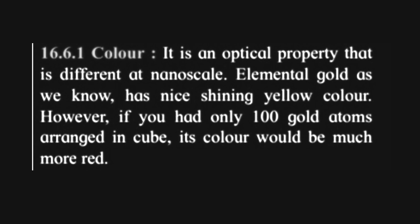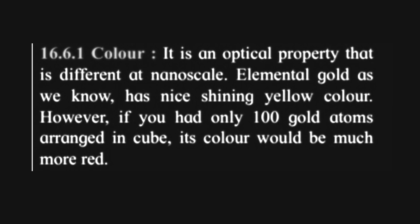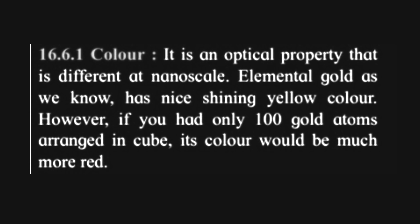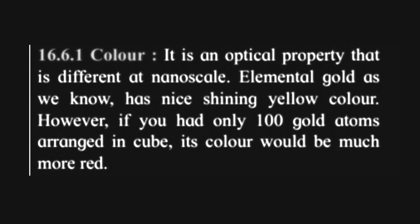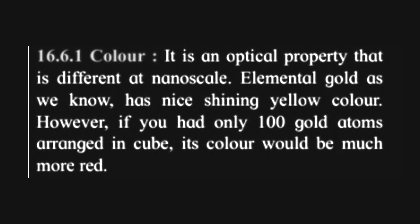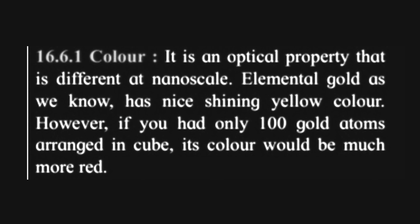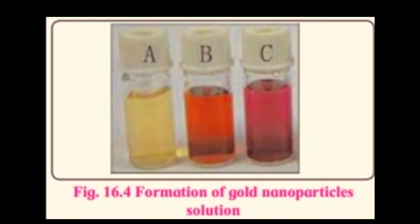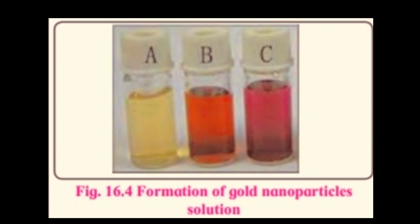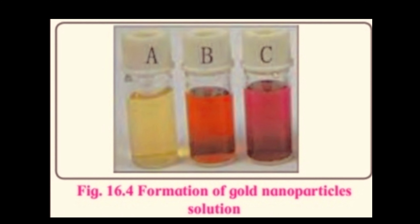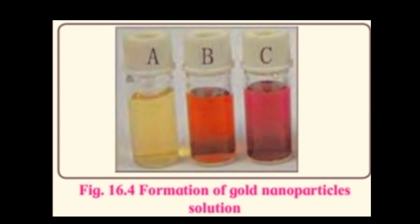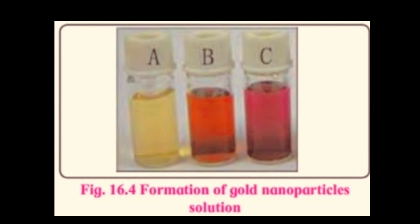However, if we had only 100 gold atoms arranged in a cube, its color would be much more red. Then apko usko bulk gold ko nanoparticles mein convert karo ga, tho uske color mein changes aa jayenge — that means uska color red apko dikhe ga. Image mein apko dikha: first is yellow, then red, and then again dark red. This depends on the size of the nanoparticles.